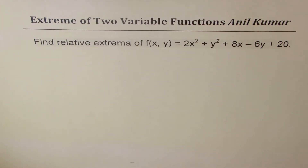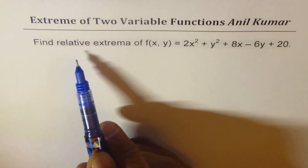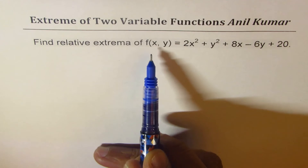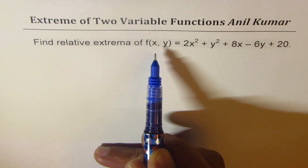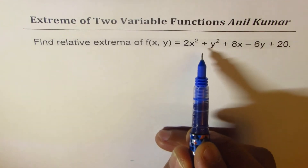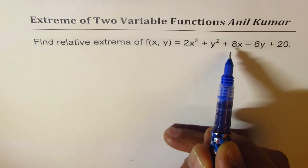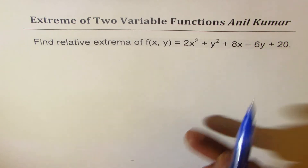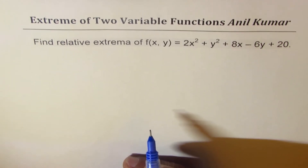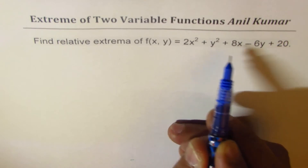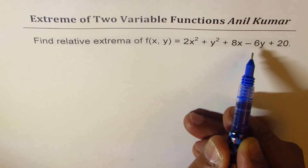I'm Anil Kumar and in this video we will learn how to find maximum or minimum value for a two-variable function. The question here is: find relative extrema of f(x,y) = 2x² + y² + 8x - 6y + 20. As you can see, we have two variables x and y.